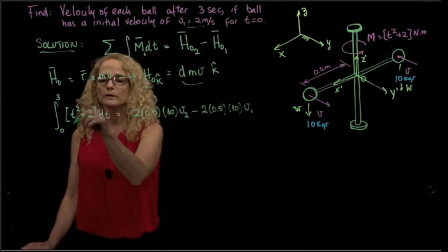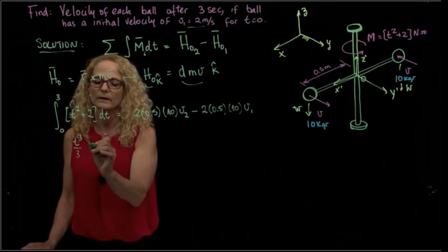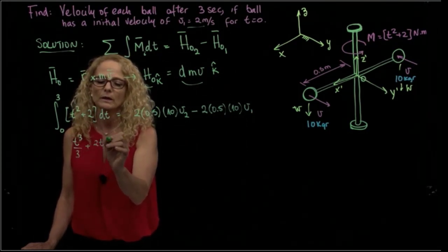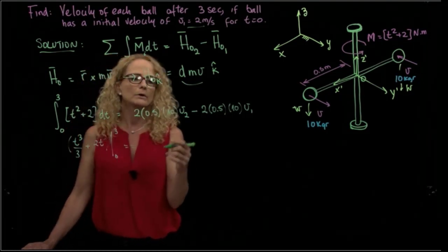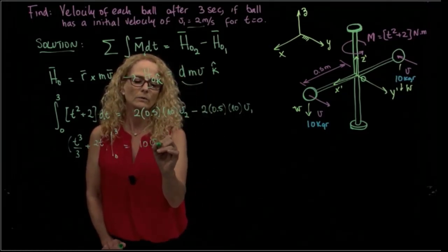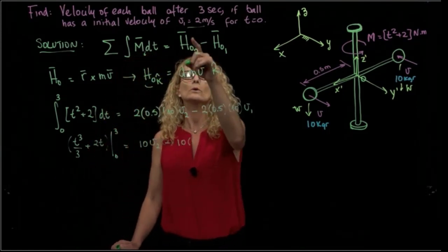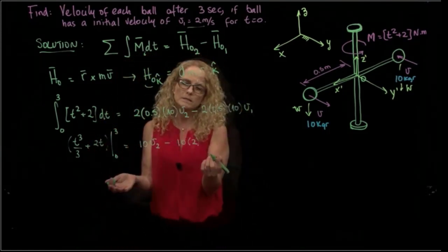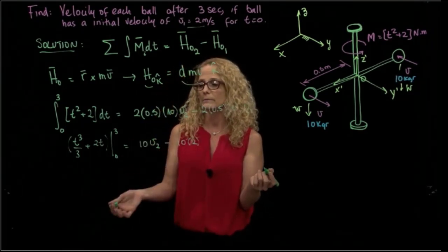So we have to integrate this part of the equation, which is t cubed divided by 3 plus 2t, and all that evaluated between 0 and 3. And that will be equals to 10v2 minus 10v1, and v1 is known, that is 2. So from here we see that the only unknown that we have is the final velocity.